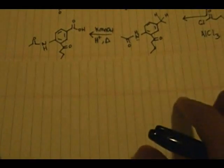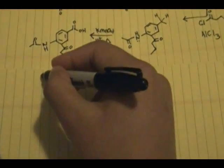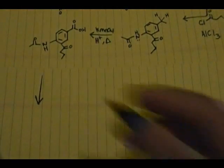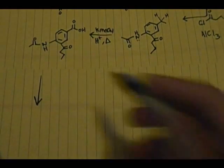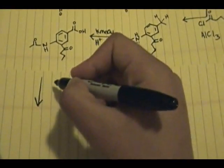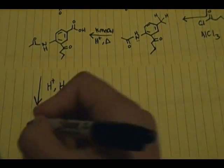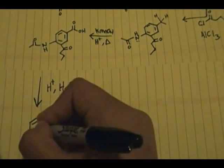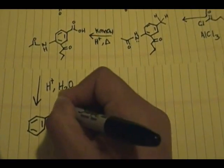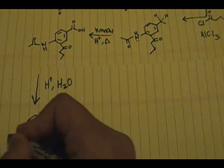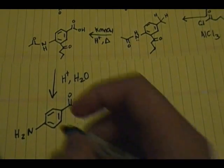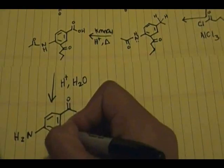The next step after the oxidation was to regenerate the NH2 group — the amine. To do that, I used H+ (a proton source) and H2O, which hydrolyzes the amide. The product from this step has the carboxylic acid, the regenerated NH2 group, and the ketone still present.